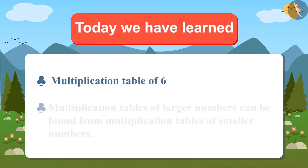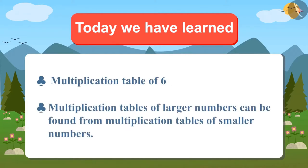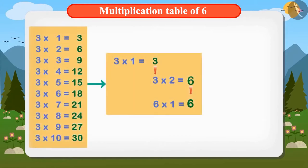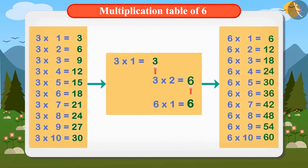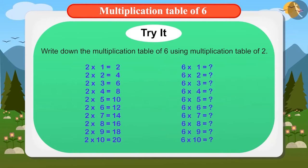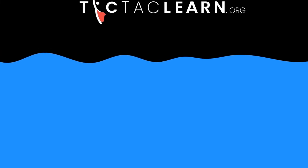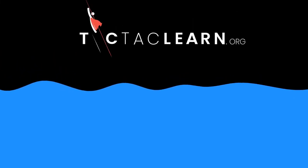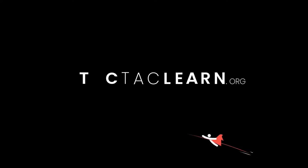Today you learned the multiplication table of six, and you also learned that multiplication tables of bigger numbers can be found from multiplication tables of smaller numbers — just like Vandana figured out the multiplication table of six from the multiplication table of three. You can also try to find the multiplication table of six from the multiplication table of two. See you next time!